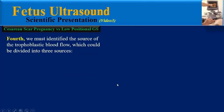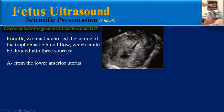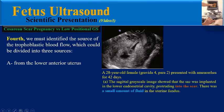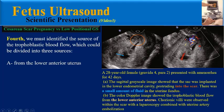In the next step, we must identify the source of the trophoblastic blood flow, which could be divided into three sources. The first source is from the lower anterior uterus. As an example, in a 28-year-old pregnant female, the sagittal grayscale image shows that the sac was implanted in the lower endometrial cavity, protruding into the scar, with a small amount of fluid in the uterine fundus. In the color Doppler image, the trophoblastic blood flow from the lower anterior uterus is determined.